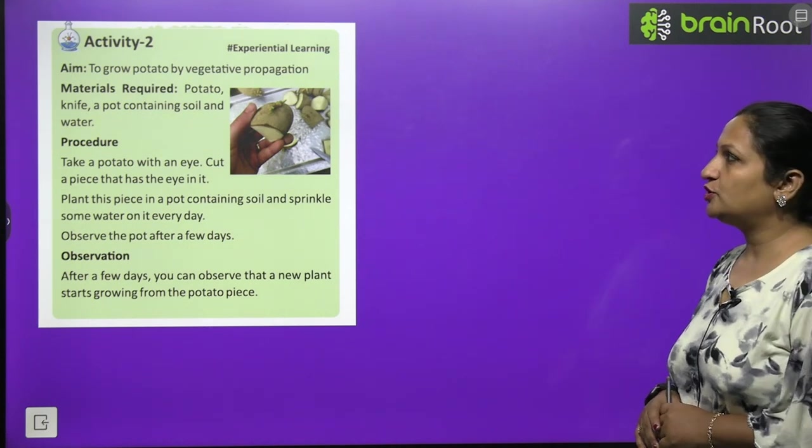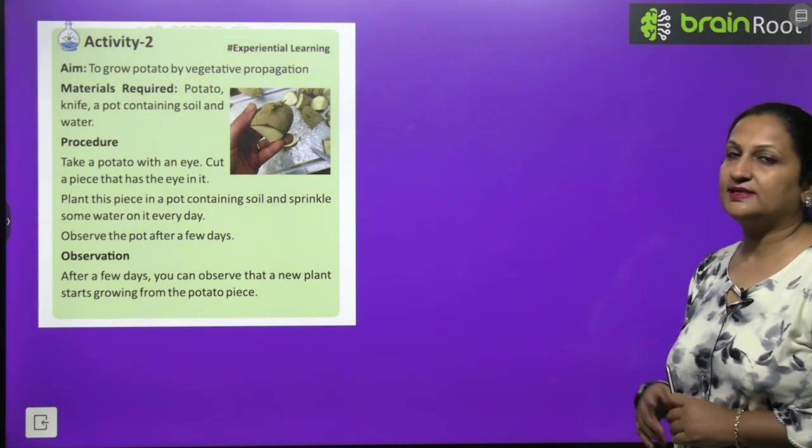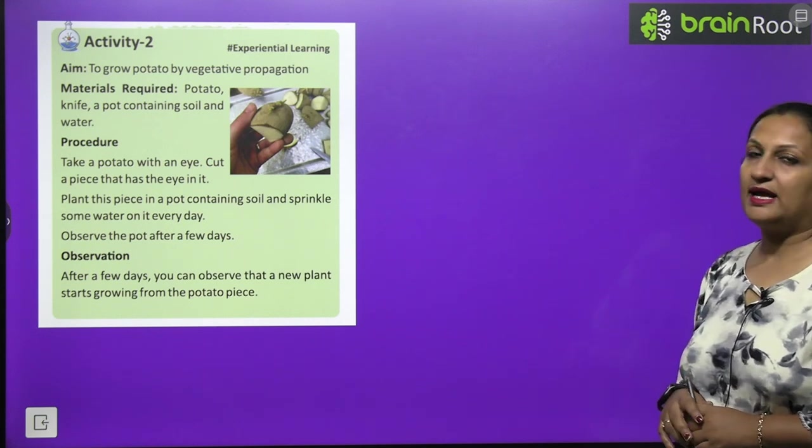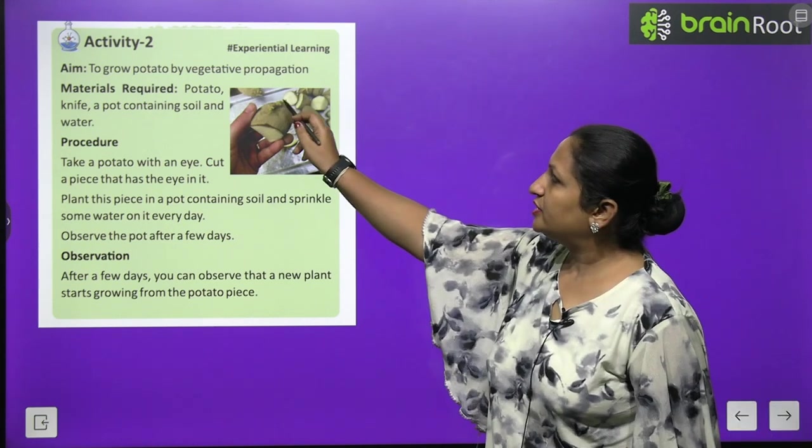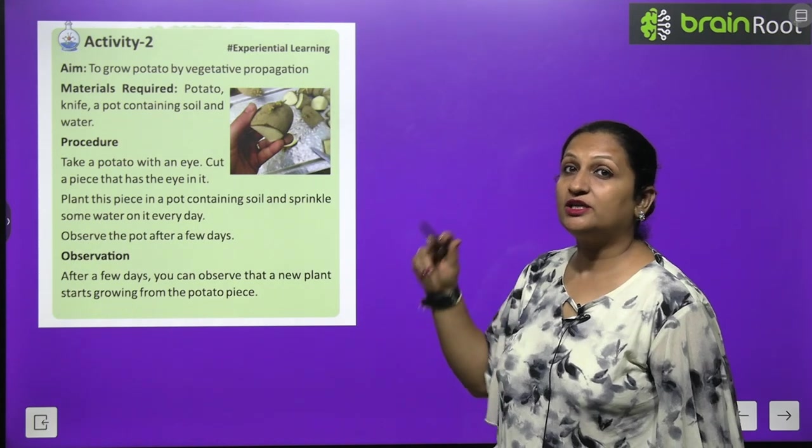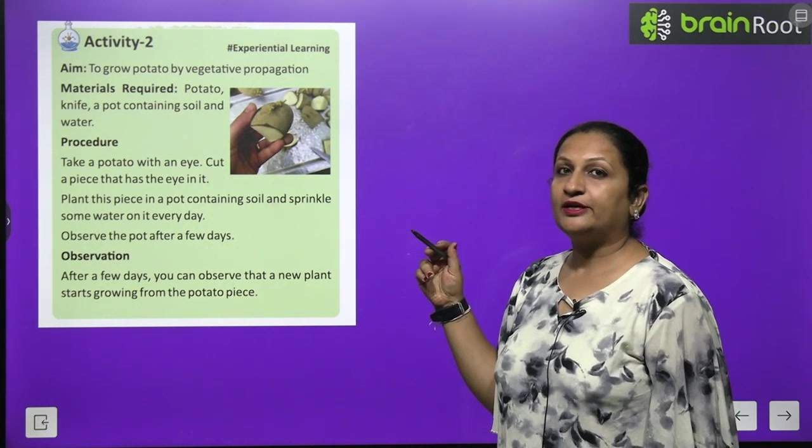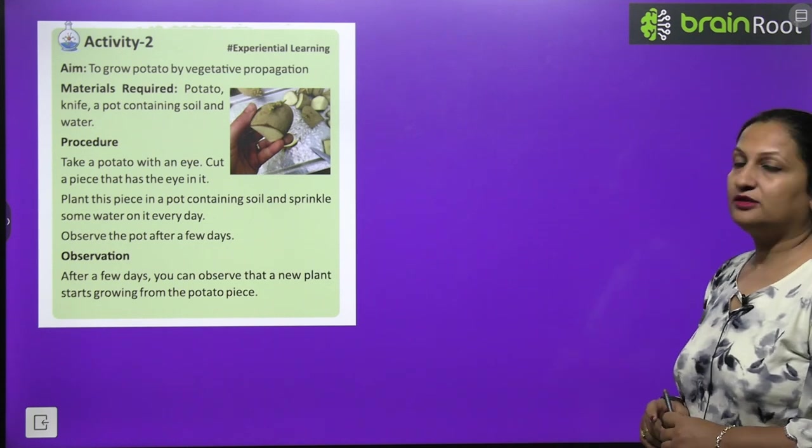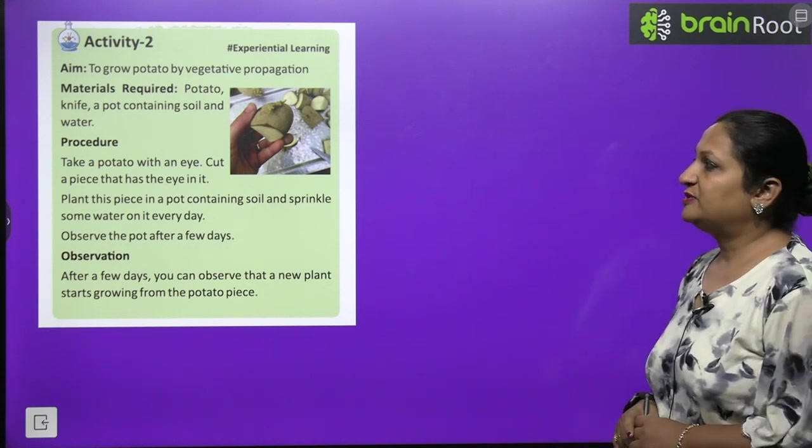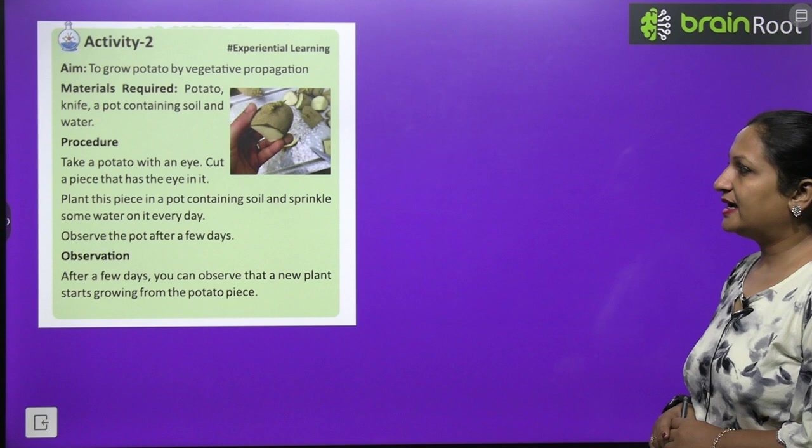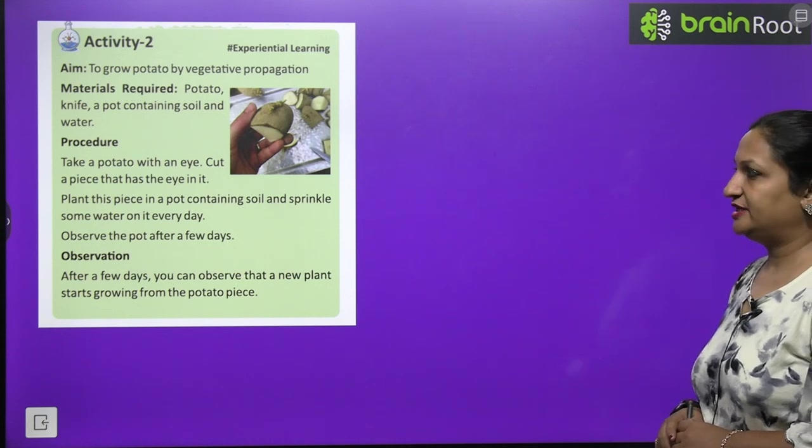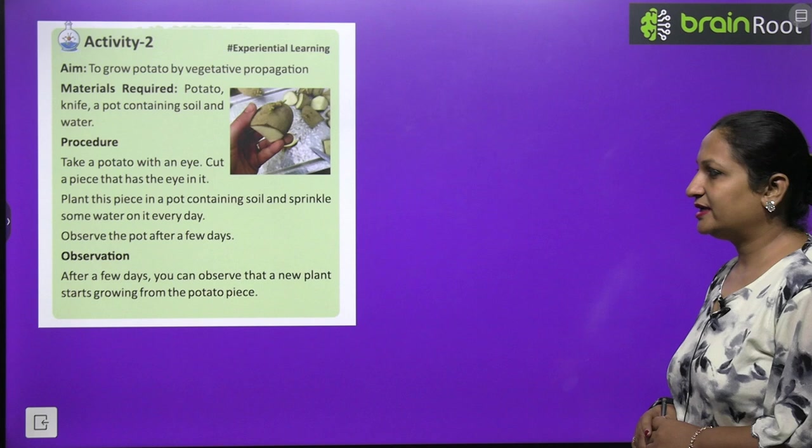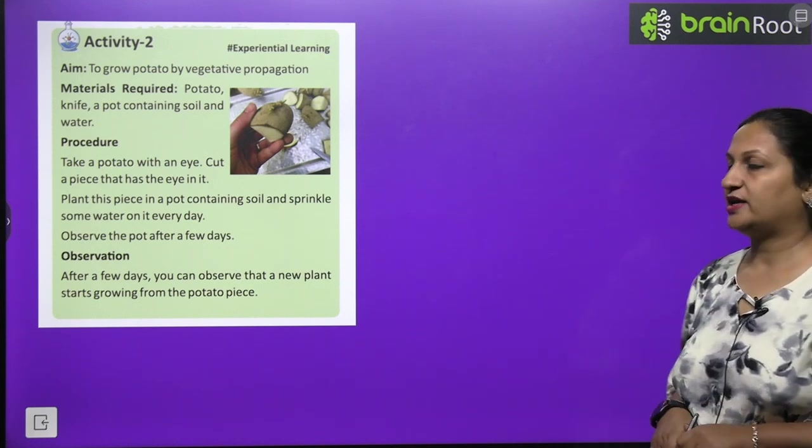Activity 2: To grow potatoes by vegetative propagation. For this you need a potato, knife, pot containing soil and water. You can see these outgrowths - these outgrowths are eyes developed in potato. Take a potato with an eye, cut the piece that has an eye in it. Plant this piece in a pot containing soil and sprinkle some water on it everyday. Observe the pot after few days. You will see that new plant will grow from here.